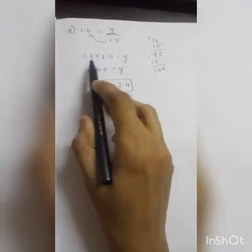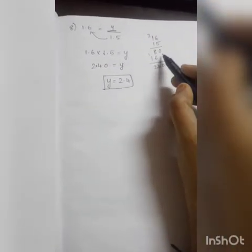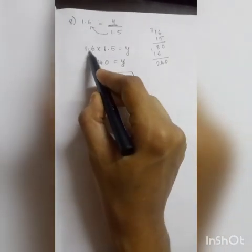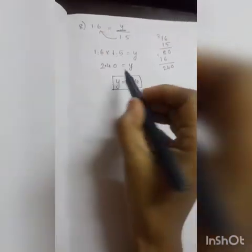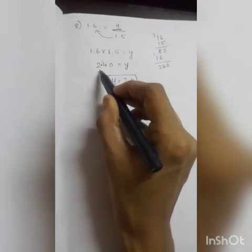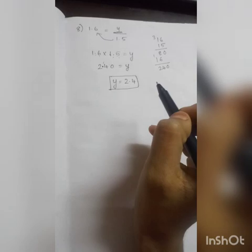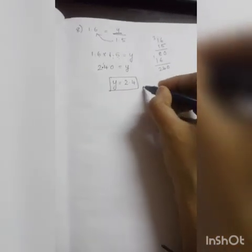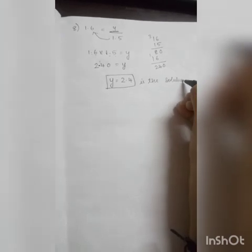Listen carefully: 1.6 into 1.5 gives 240. After the decimal point there is 1 digit in 1.6 and 1 digit in 1.5, so totally 2 digits after the decimal. Placing the decimal after 2 digits from the right gives 2.40, which we write as 2.4. So 2.4 is the solution.